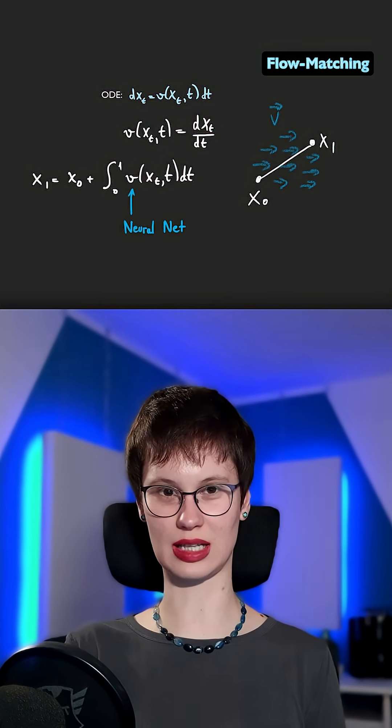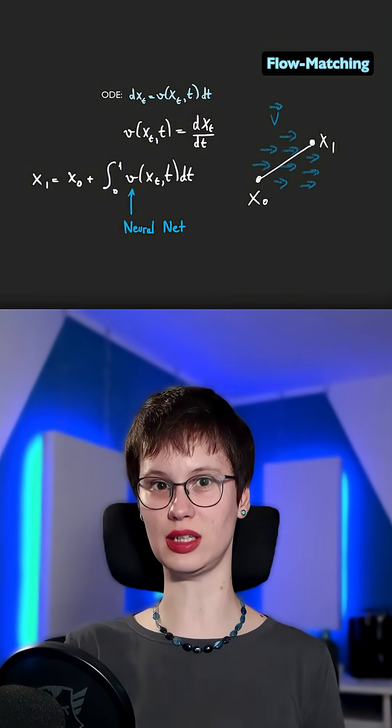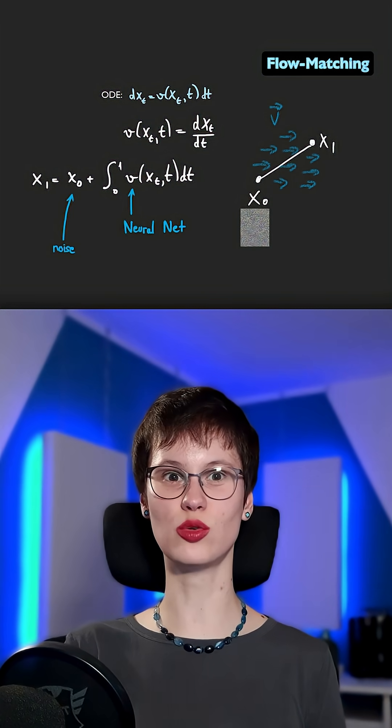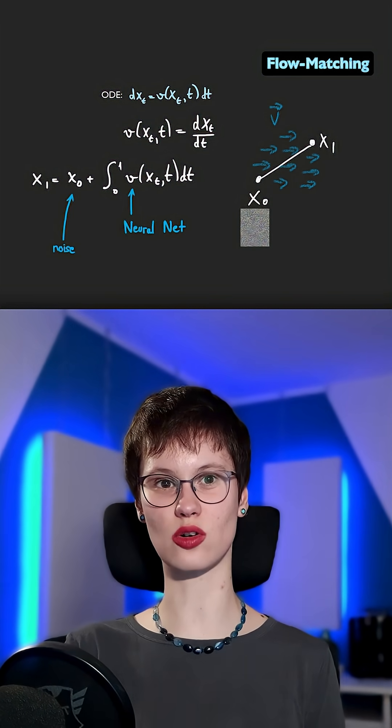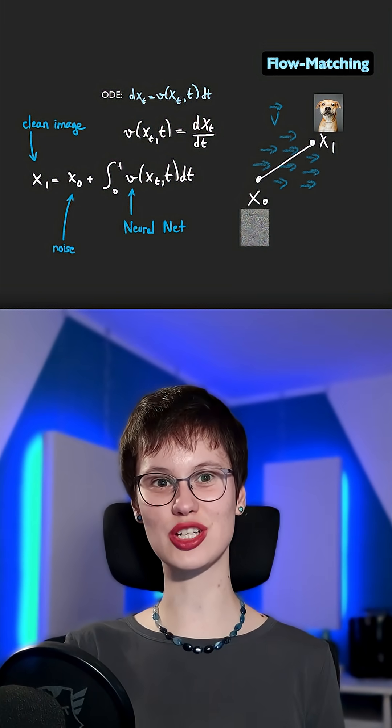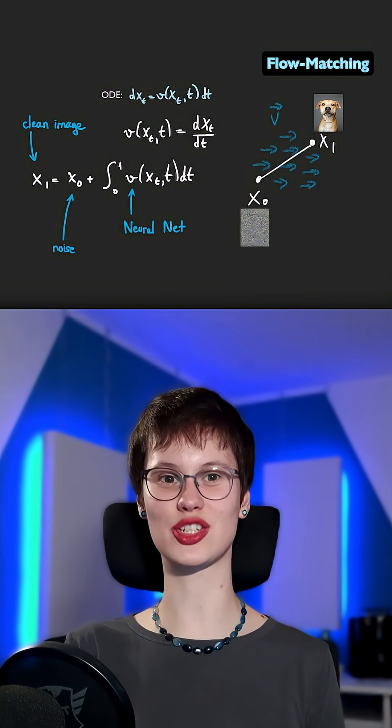So if we train a neural network that learns this velocity field v, we can use it to move from a random noise x0 all the way to a clean image x1 just by following this equation.